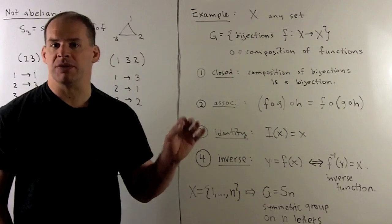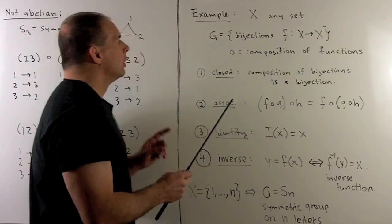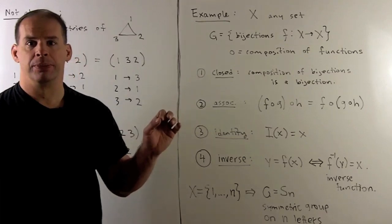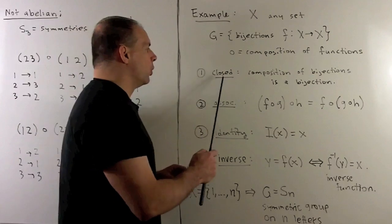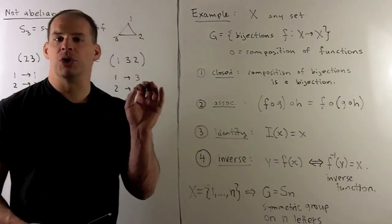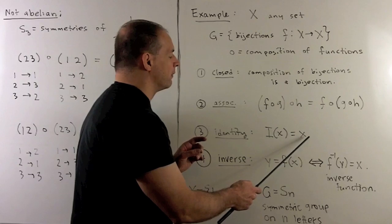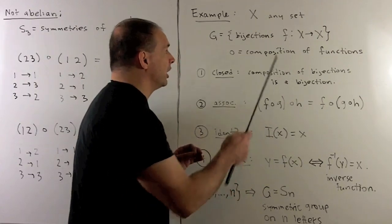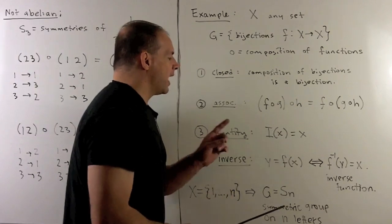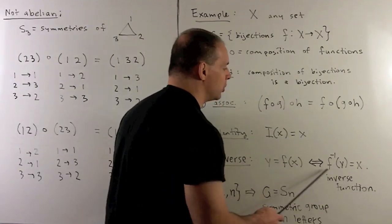S₃ is a special case of a general construction. This is one way to generate a giant class of groups. I'm going to let X be any set. We're going to let our group be the set of bijections from X to itself. Multiplication is going to be composition of functions. To verify the four properties: closure follows because composition of two bijections is another bijection. Associativity follows from associativity for functions. For the identity element, take the bijection that carries each element to itself. Finally, for inverses, if I have a bijection f, then its inverse is the inverse function f⁻¹, and this works because we're working with bijections.